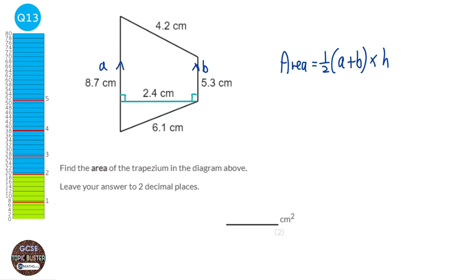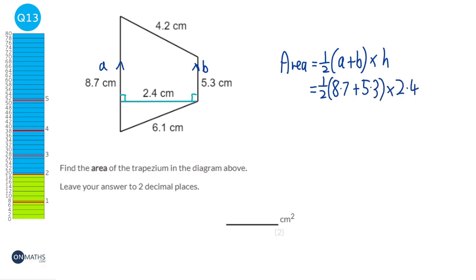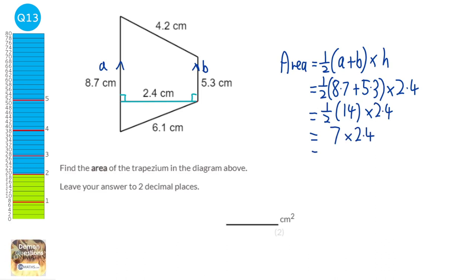So let's fill this into our formula. It's going to be half times a, which is 8.7, plus b, which is 5.3, and then times that by the height, which is 2.4. That's going to be half times 14 times 2.4, which is 7 times 2.4, and then that will be 16.8. All the units in the diagram are in centimetres, so our area will be centimetres squared.